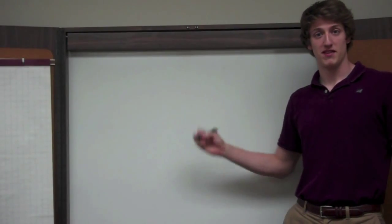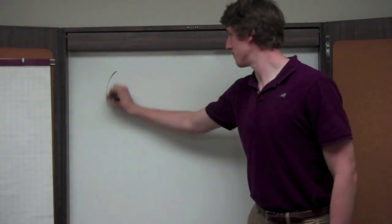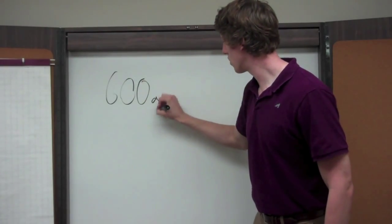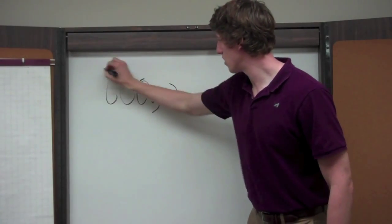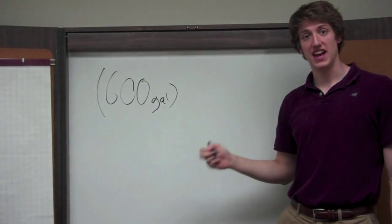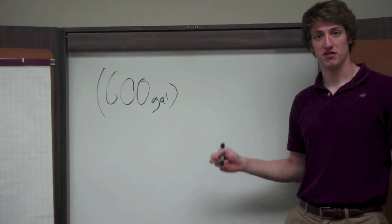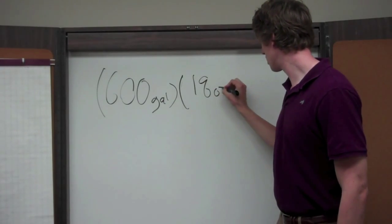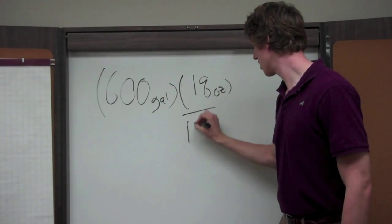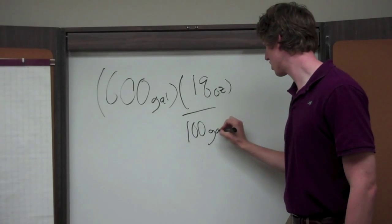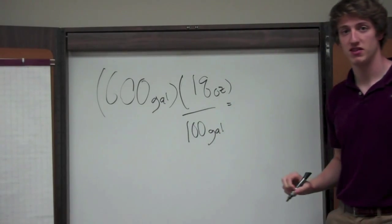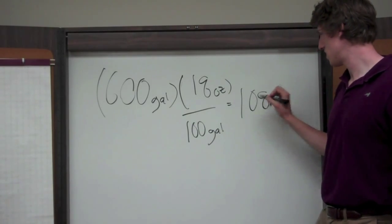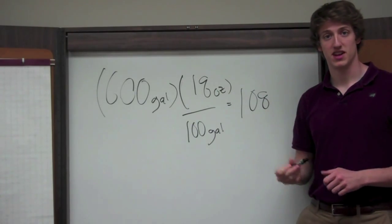So let's just say we have a 600 gallon tank. We'll make our add of 18 ounces per 100 gallons of bath solution. And this will give us a final add of 108 ounces of 50% liquid caustic.